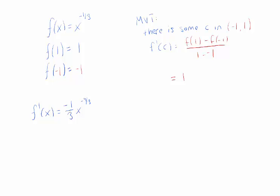And it's true, we can check that this derivative is not going to give us a value of one between one and minus one. If we try and find which c we're talking about, we solve minus one third c to the minus four thirds equals one, and we run into a problem.